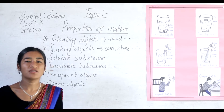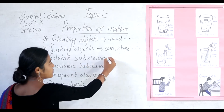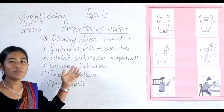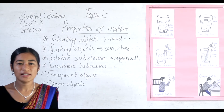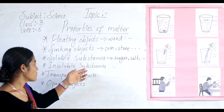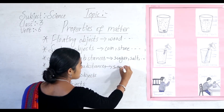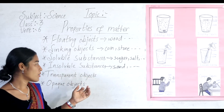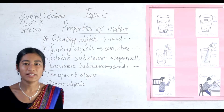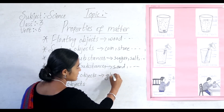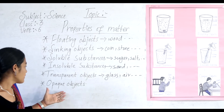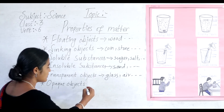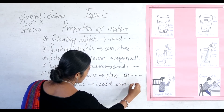Sinking objects — for example, coin, stone, etc. Third: soluble substances — those substances which get dissolved in water. For example, sugar and salt. Fourth: insoluble substances — those substances which do not get dissolved in water. For example, sand and chalk powder. Fifth: transparent objects — those objects through which light can pass easily. For example, glass, etc.